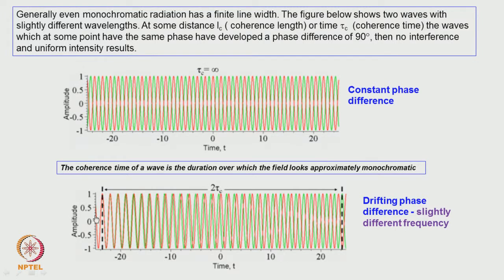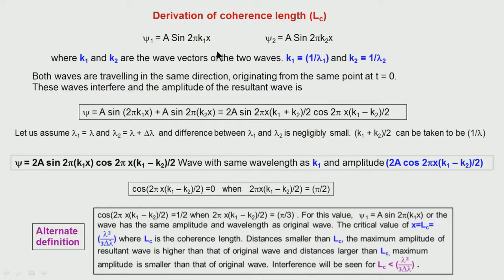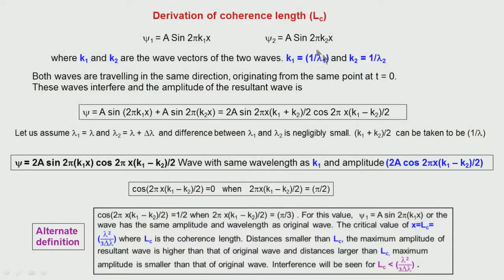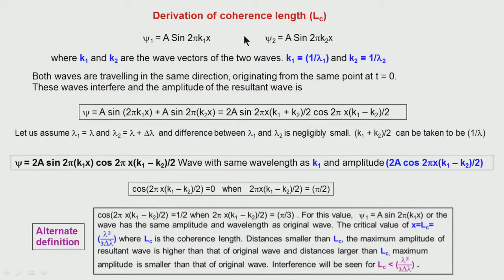This distance is called the coherence length, and the corresponding time is called the coherence time. To find an expression for coherence length and coherence time, we assume two waves: ψ₁ = A sin(2πk₁x) and ψ₂ = A sin(2πk₂x), where k₁ and k₂ are two different wave vectors corresponding to wavelengths λ₁ and λ₂. We assume the difference between the wavelengths is extremely small and that both waves are travelling in the same direction.